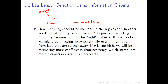As you increase the number of lags, you reduce the root mean squared forecast error. Initially, you might think to just add as many lags as possible to drive this error down. But actually, it's not that simple, because if you include too many lags, the root mean squared forecast error rises again. If you include too few lags, you are suffering from underfitting, but if you include too many lags, you are suffering from overfitting.